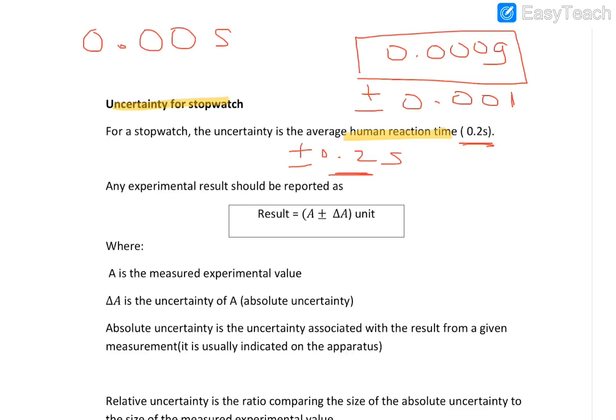And that would be to 1 decimal place. So if I have a stopwatch that shows 23.15 seconds, when I'm recording it with the uncertainty I would record it as 23.1—so 1 dp—plus minus 0.2 seconds.